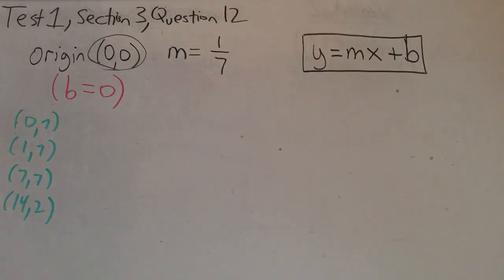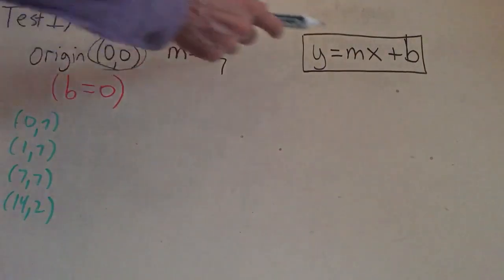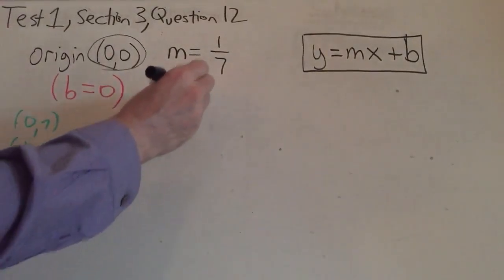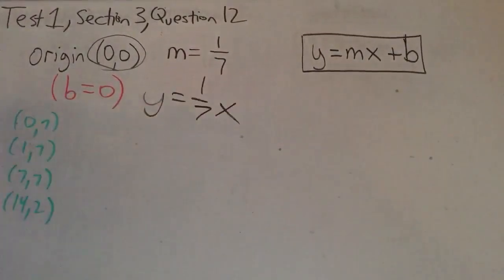All right, so that means we can write an equation of the line in slope-intercept form as Y = (1/7)X. In other words, we're just looking for a point whose Y-coordinate is 1/7 of the X-coordinate. We could just go through the points, multiplying each X-coordinate by 1/7, to see if we get the corresponding Y-coordinate.